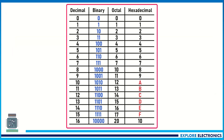Now, let us understand what the equivalent numbers are across systems. Decimal 0 is binary 0, octal 0, and hexadecimal 0. Decimal 1 is the same as binary 1, octal 1, and hexadecimal 1. For decimal 2, the binary equivalent is 10 (since the next combination is 1 0), but in octal and hexadecimal it remains 2. Likewise, we can write the equivalent binary, octal, and hexadecimal for further numbers.